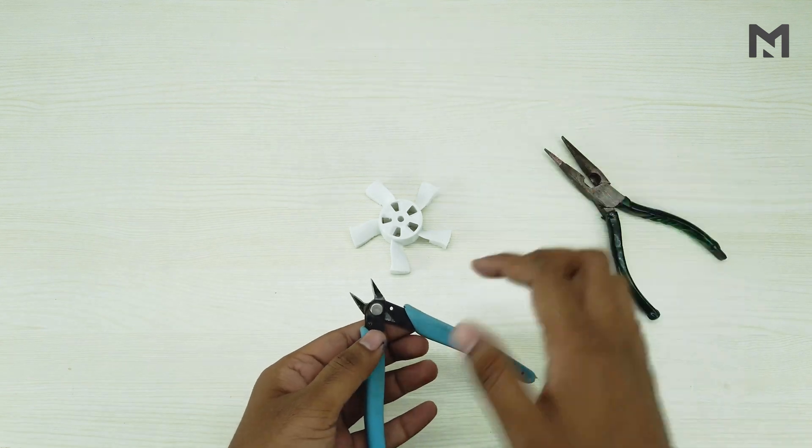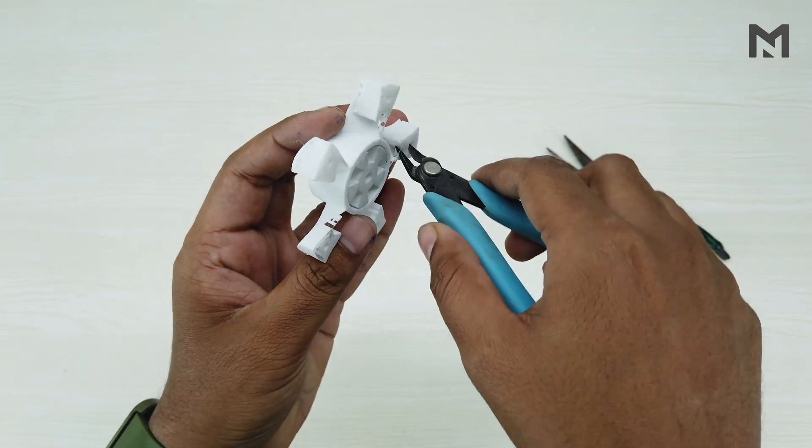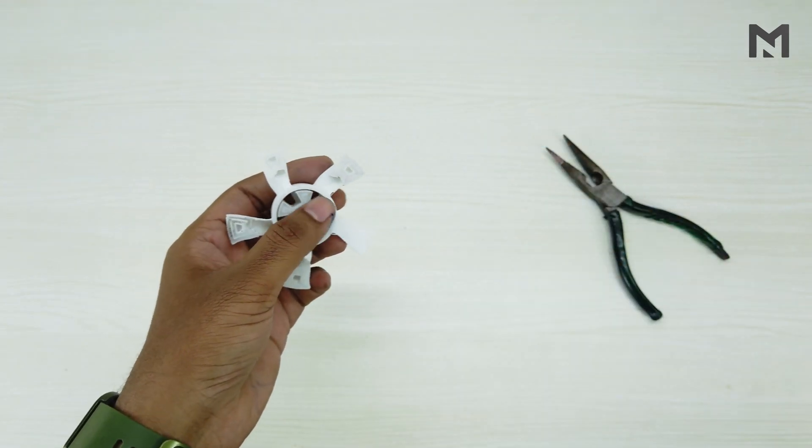Take a nose plier and wire cutter to remove the supports. Remove the supports from the blades with the wire cutter. Because the blades are narrow, take caution while removing the supports.